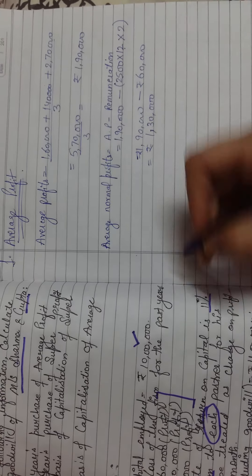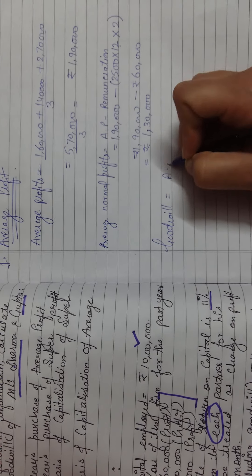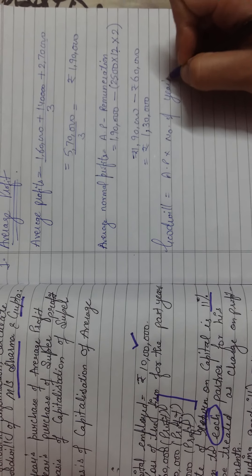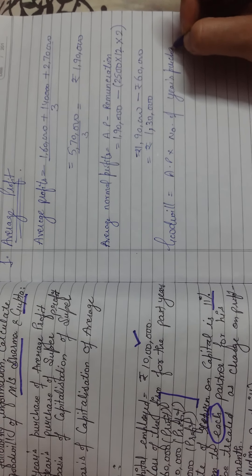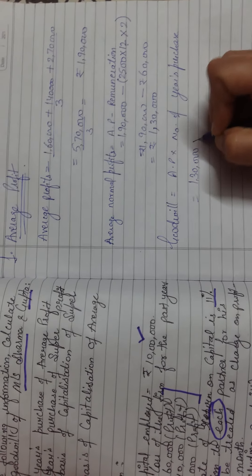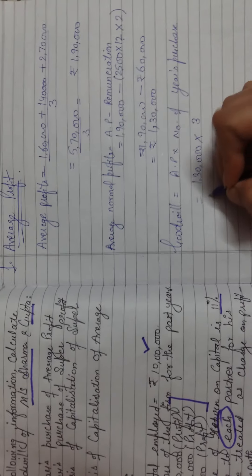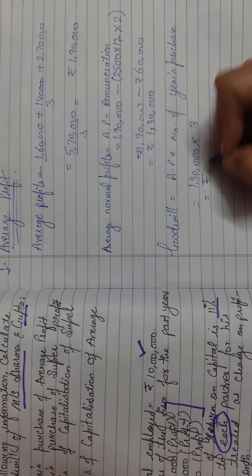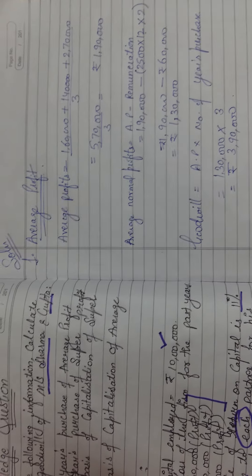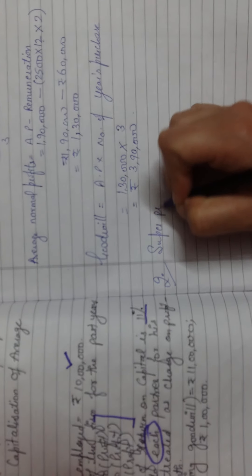Goodwill equals average profits multiplied by the number of years purchase. Average profits are one lakh thirty thousand and the number of years purchase is three. So the value of goodwill under the average profit method is rupees three lakh ninety thousand.